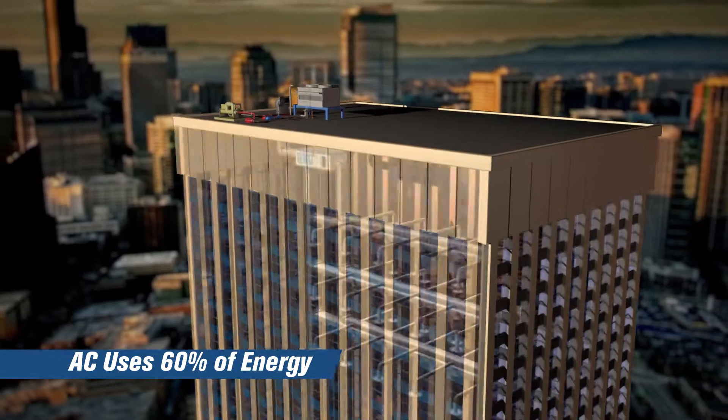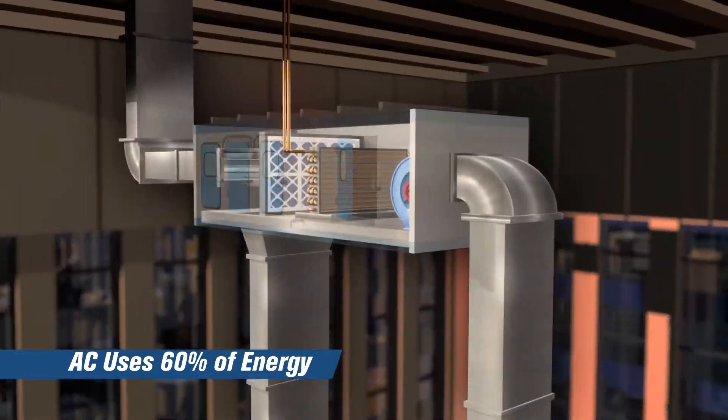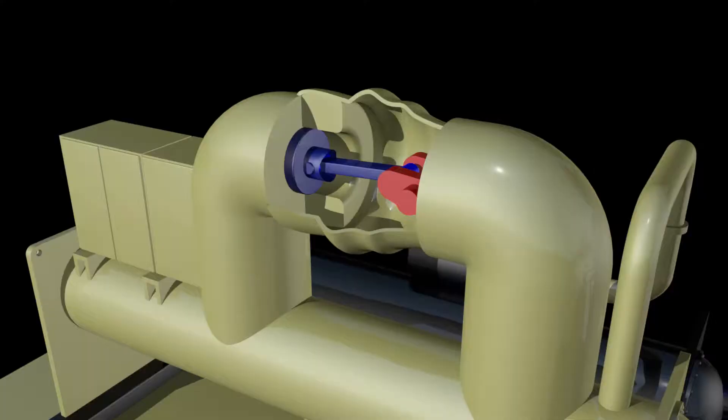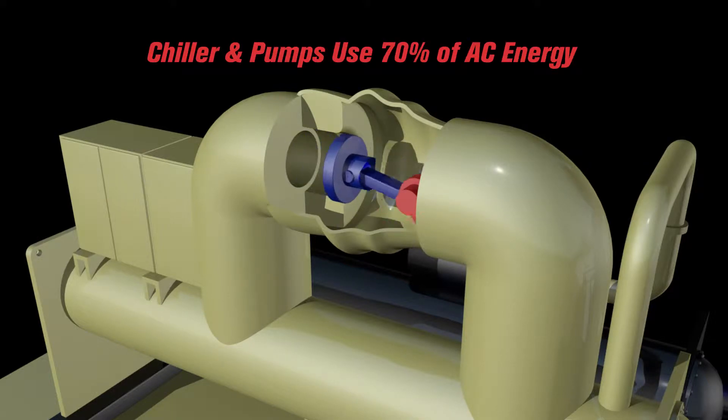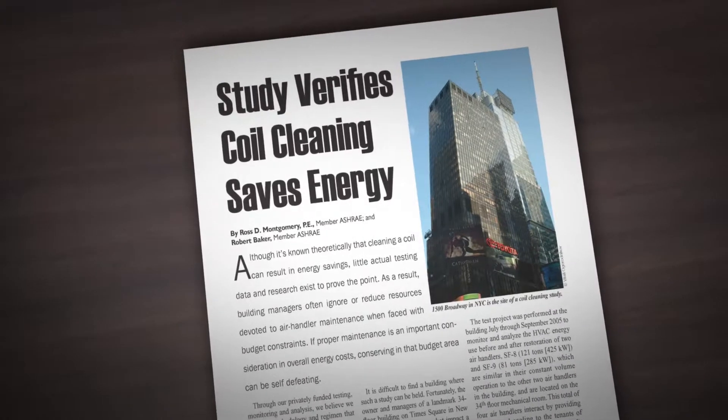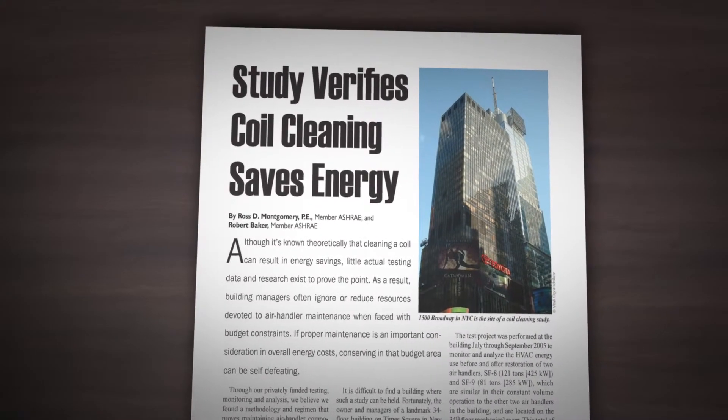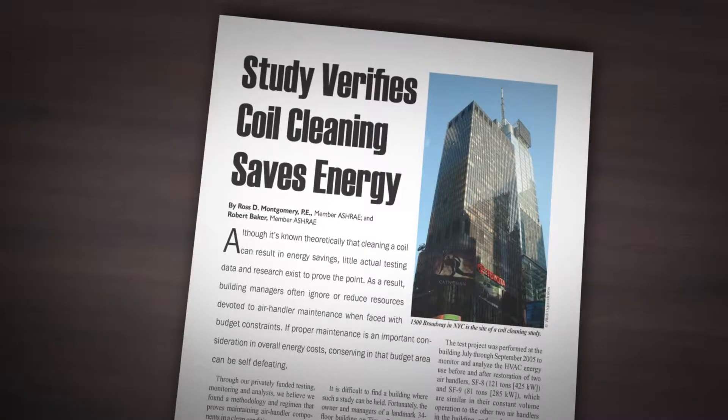In a typical office building, the AC system uses 60% of the building's energy, and of this, the chiller and pumps consume 70%. The 2006 ASHRAE published study estimated savings of 15 to 30% from clean coils.